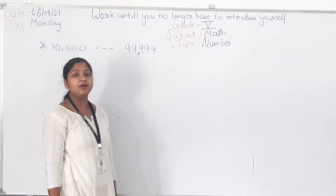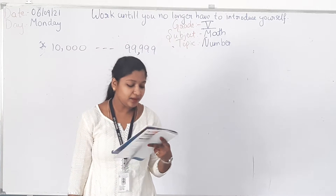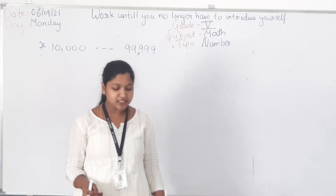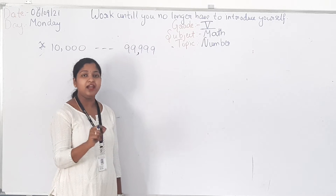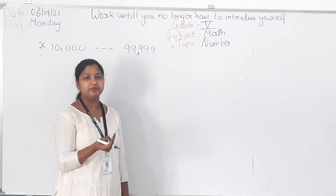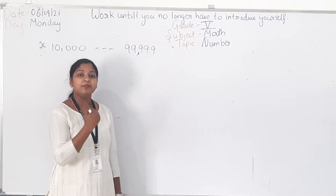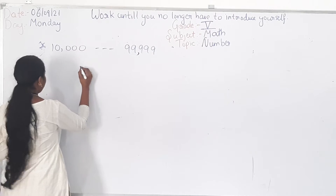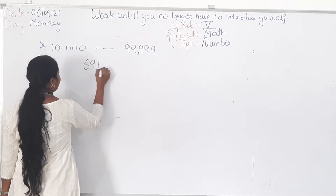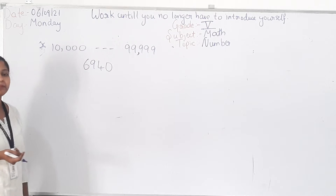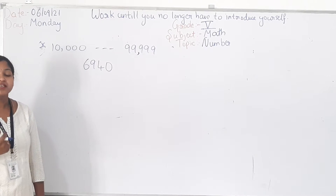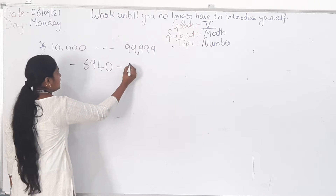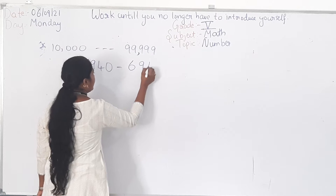Today in this class we will learn about successor and predecessor. What is successor and predecessor? Successor is nothing but adding 1 to any number. Predecessor means subtracting the number by 1. For example, the number is 6940. Can you write the successor and predecessor for this number? Successor means adding 1, so if you add 1 to this number, the number you will get is 6941.